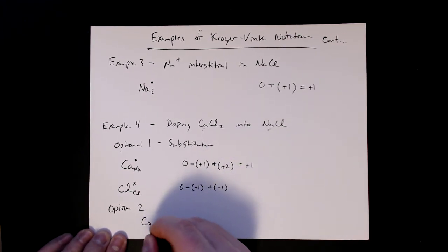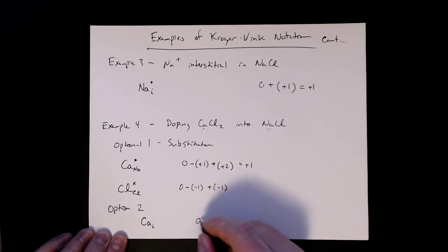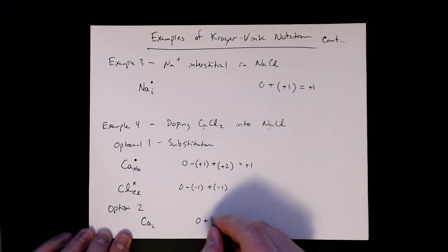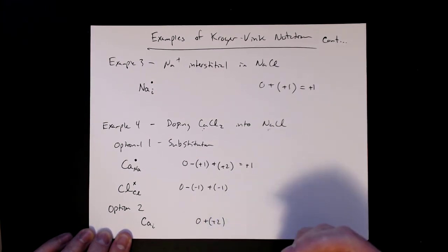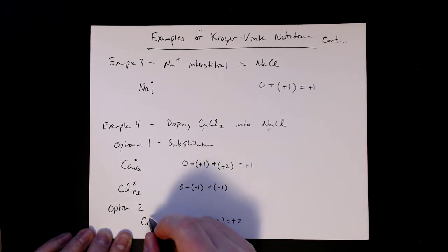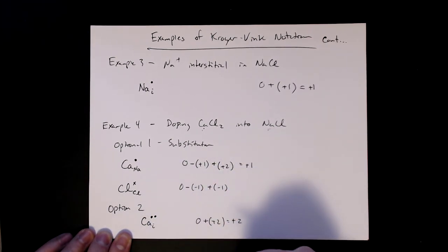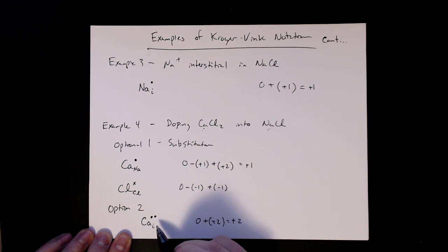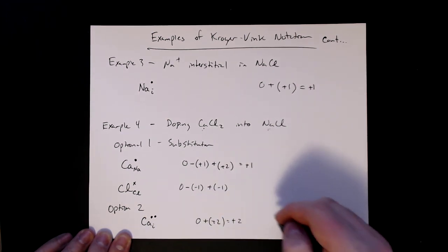So the first option would be calcium into an interstitial. So Ca into that interstitial site, and then again, perfect crystal, and then we're going to add a plus two charge. That gives us a plus two charge. So plus two now, again, double dots to represent, or points, to represent the plus two charge.